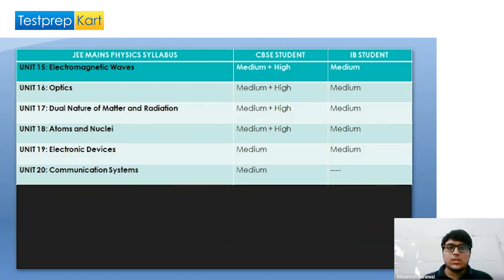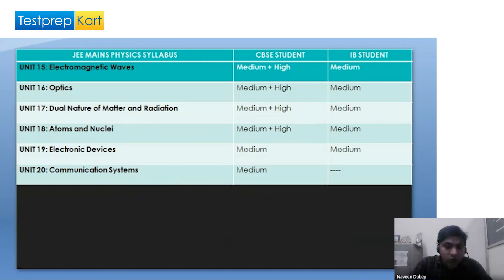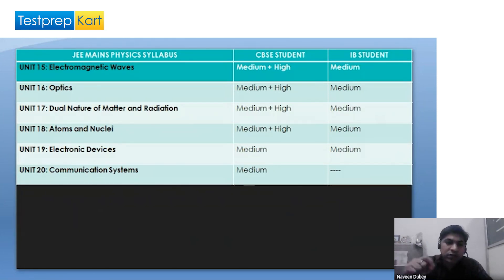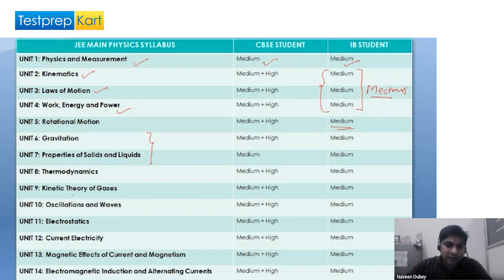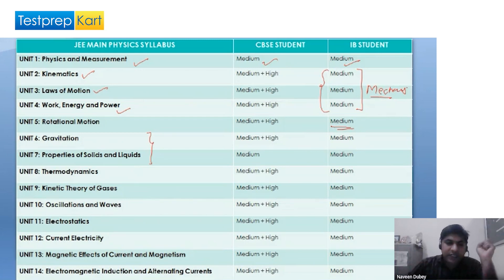For an IB student, which specific units of JEE Main physics should they focus on more? If I talk about a beginner — a student just entering the IB curriculum and targeting JEE Mains — they should begin with more focus on mechanics first of all. After that, thermodynamics is a very important topic, then oscillations and waves, and finally electrostatics and magnetic concepts.